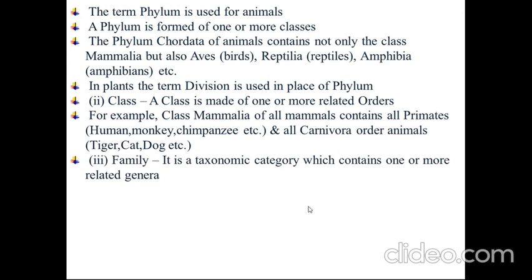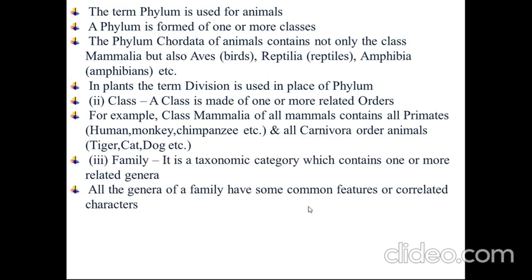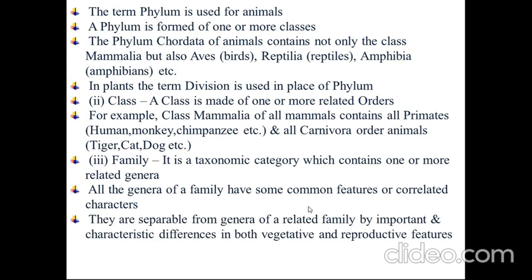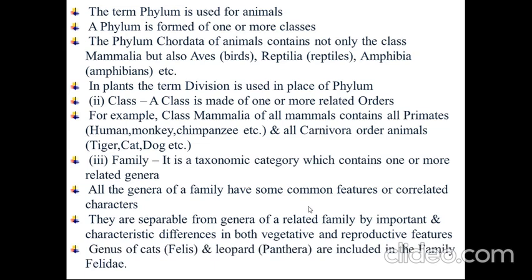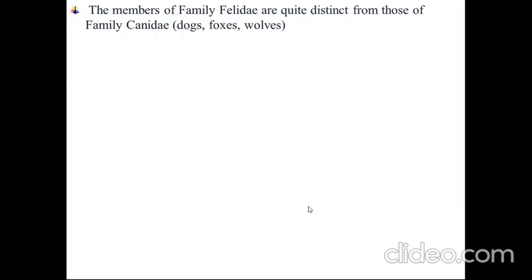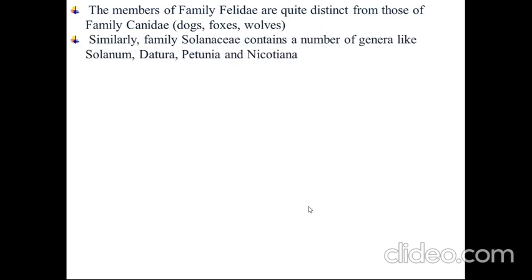Family — it is a taxonomic category which contains one or more related genera. All the genera of a family have some common features or co-related characters. They are separable from genera of a related family by important and characteristic differences in both vegetative and reproductive features. Genus of cats, Felis, and leopard, the Panthera, are included in the family Felidae. The members of family Felidae are quite distinct from those of family Canidae — the dogs, foxes, and wolves. Similarly, family Solanaceae contains a number of genera like Solanum, Datura, Petunia, and Nicotiana.